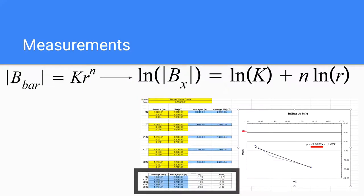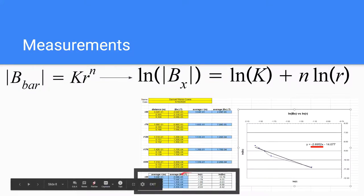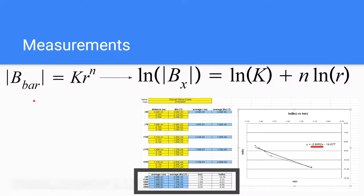Here are measurements from the lab, as in various distances and magnetic fields at those distances and their averages. More importantly, we have a graph here that comes from the equation shown above. Initially, we can model the bar magnet's magnetic field as some coefficient times a distance to a factor n. Using the properties of logarithms, we can get this equation, which we are then able to plot as shown down here.